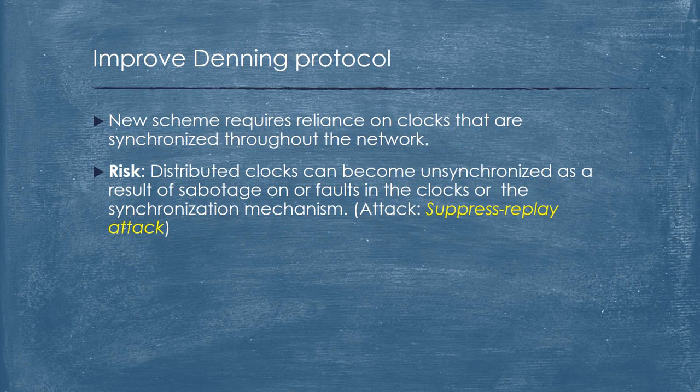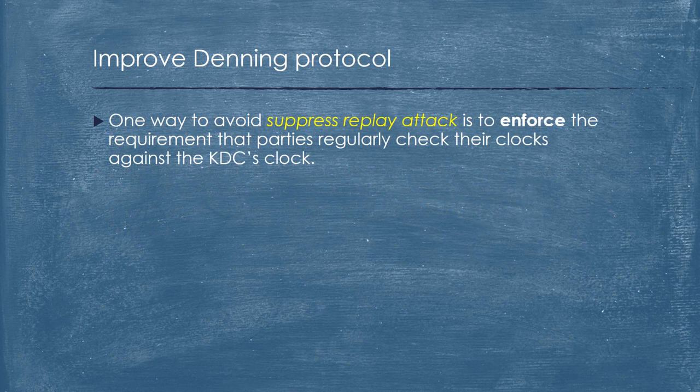Improved Denning Protocol. The new scheme requires reliance on clocks that are synchronized throughout the network. Risk: distributed clocks can become unsynchronized as a result of sabotage or faults in the clocks or the synchronization mechanism — a suppress replay attack. One way to avoid a suppress replay attack is to enforce the requirement that parties regularly check their clocks against the KDC's clock.